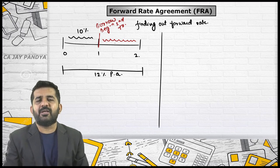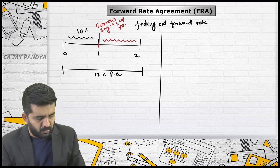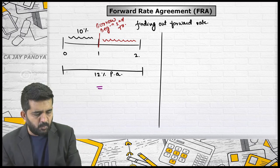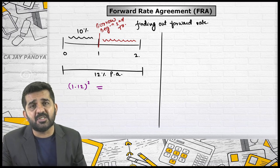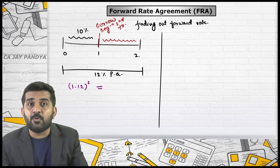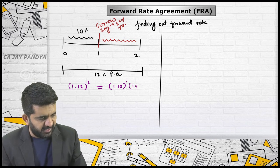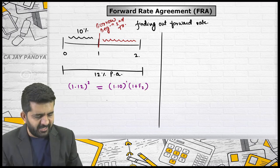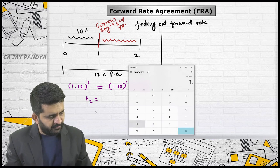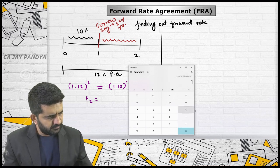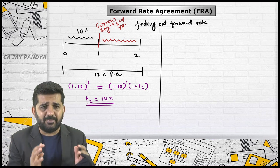To find the forward rate, if one rupee invested in both timelines should give equal amounts: investing 1 rupee gives 1.12 raised to 2 on one timeline, and 1.10 raised to 1 multiplied by the forward rate on the other. This gives F2 = (1.12² / 1.10) - 1 × 100 = 14.03%, which we have seen before.